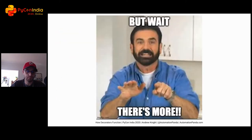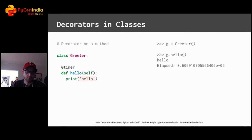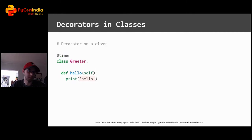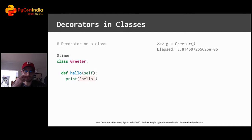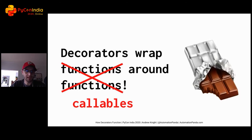But there's more. Decorators can be used in classes as well as for functions. Our timer decorator can be applied to a hello method. As long as parameters and return values are set up correctly, decorators can be applied equally to functions and methods. Decorators can even be applied directly to classes. When a decorator is applied to a class, it wraps the constructor — note that it does not wrap each method in the class. Since decorators can wrap classes and methods in addition to functions, it would technically be more correct to say that decorators wrap callables around callables.